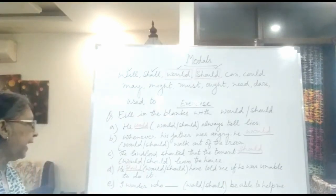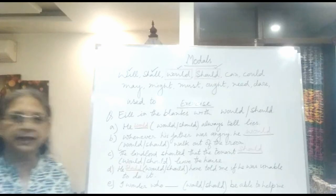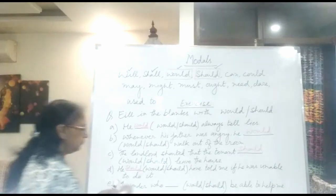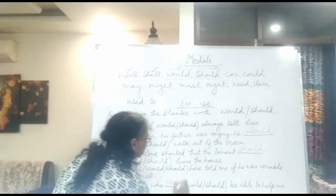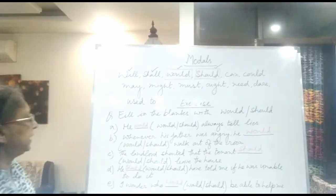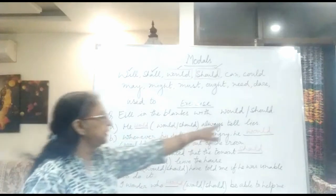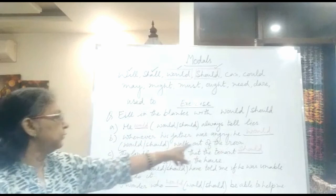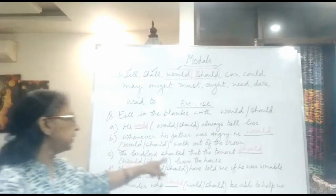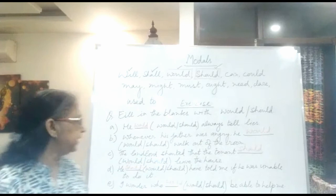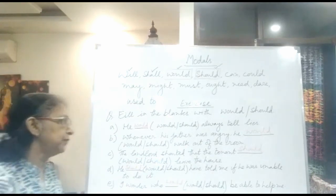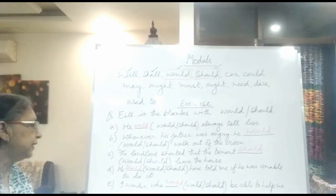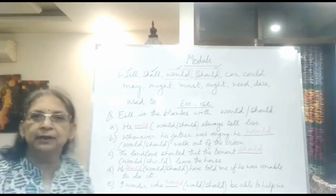The last one: I wonder who dash be able to help me. I wonder — it is a wish — so the answer is would. I wonder who would be able to help me. Quick revision of all answers: he would always tell lies; whenever his father was angry, he would walk out of the room; the landlord shouted that the tenant should leave the house; he should have told me if he was unable to do it; and I wonder who would be able to help me.